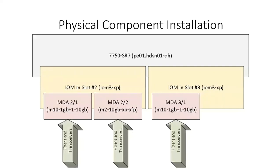Here we have the physical component installation. If you were to logically represent a given service router — in our particular case this is a 7750 SR7, so it's a 7-slot device — we have the service router itself with a given hostname, PE01 in Hudson, Ohio. Into that service router we install our input-output modules; in our example we're using slots 2 and 3. Into those IOMs we install our media-dependent adapters, and finally into our MDAs go our fiber and transceivers.